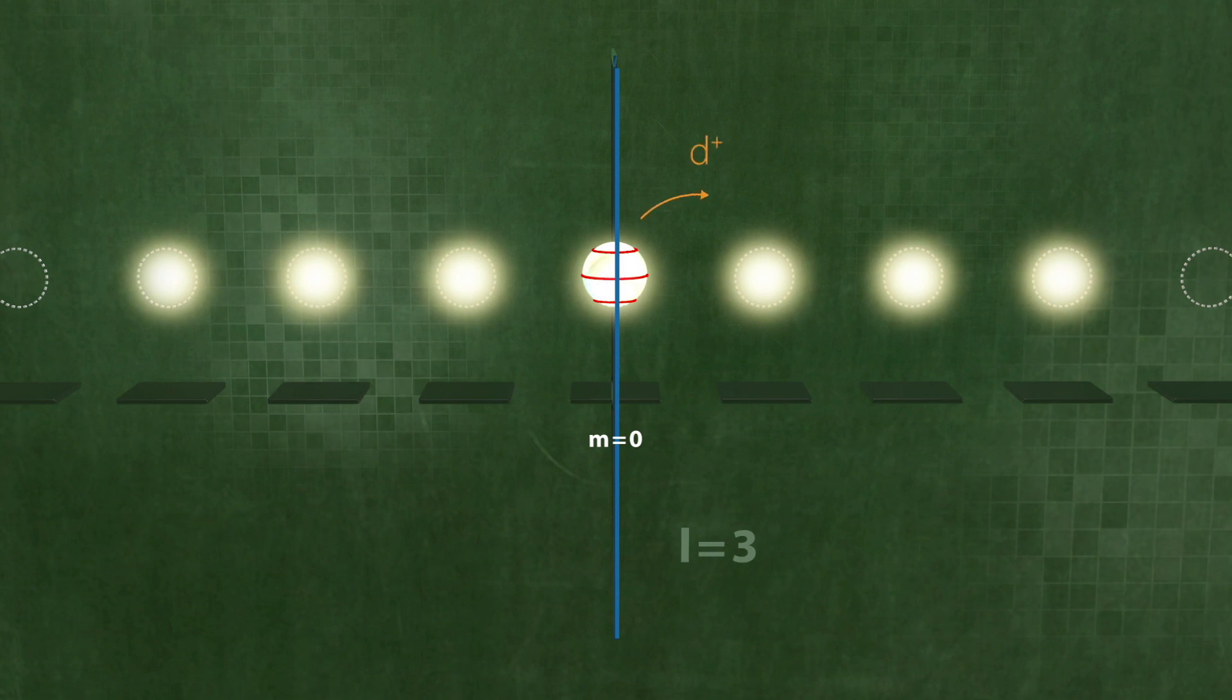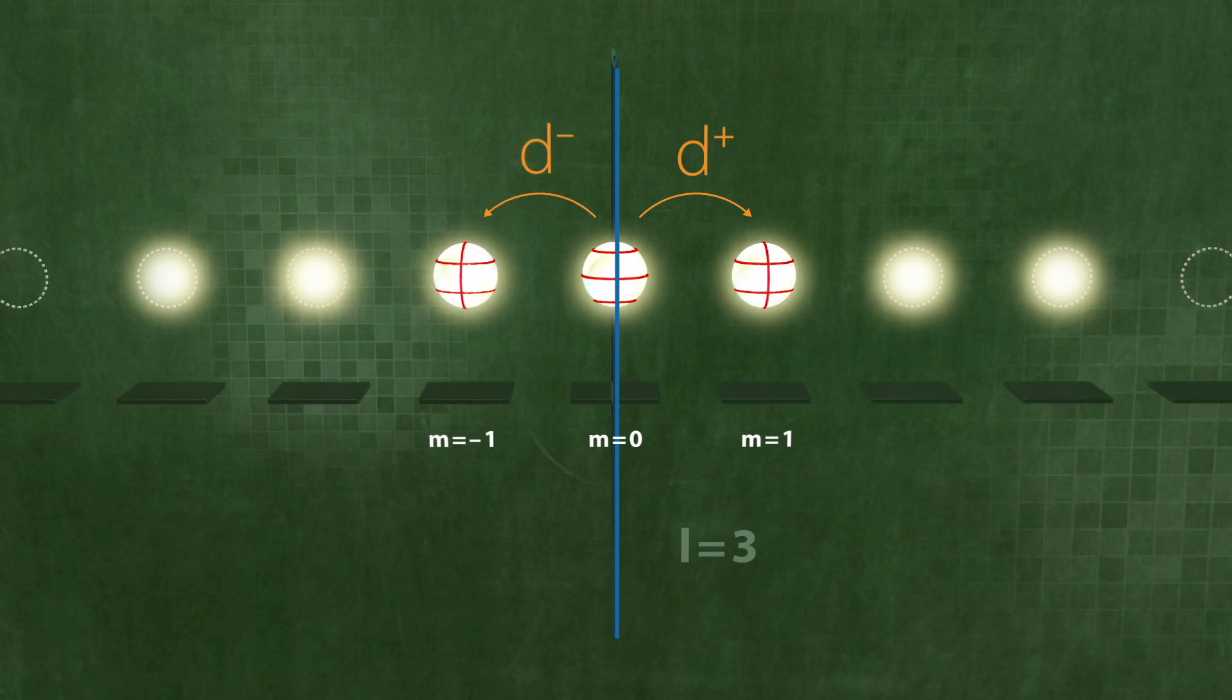The nodal rotation operators rotate one nodal line from horizontal to vertical. They thus generate the state M equals plus one from the state M equals zero, with one nodal line rotating clockwise. This is reflected as M equals minus one, with one nodal line rotating anticlockwise.